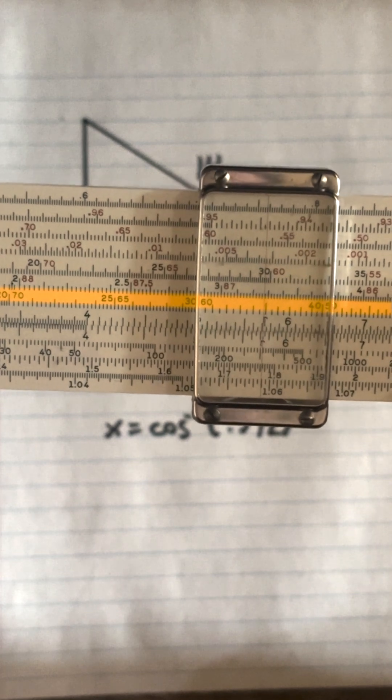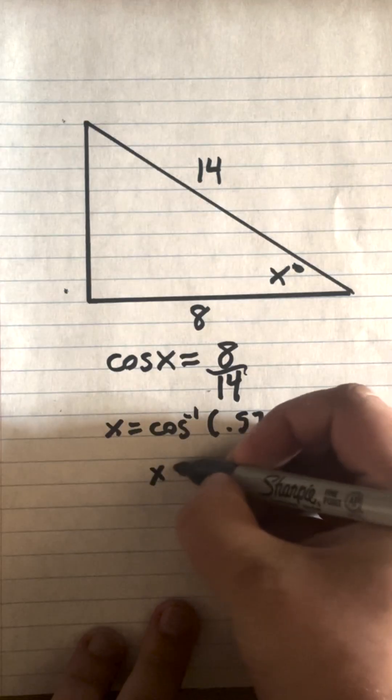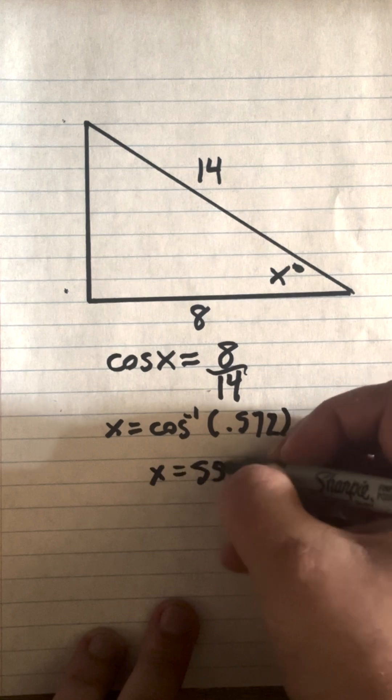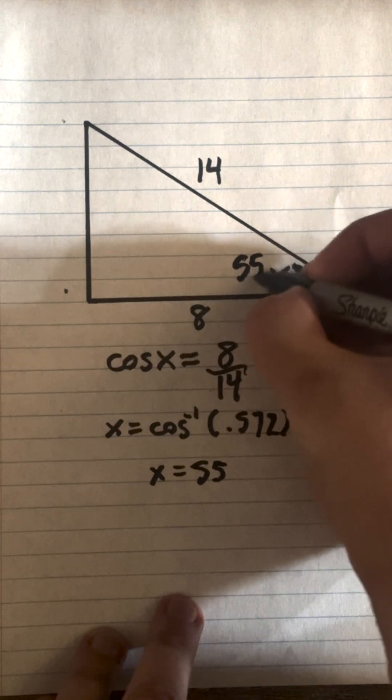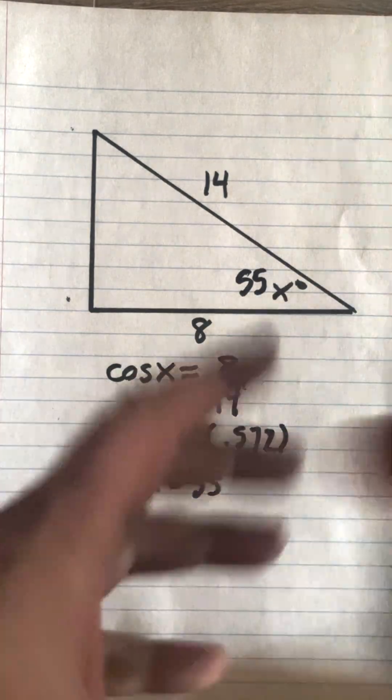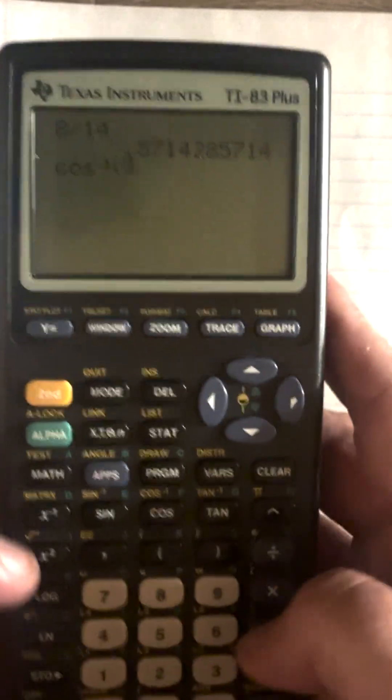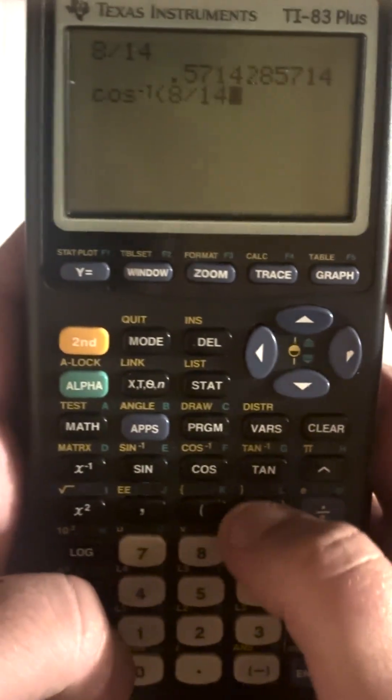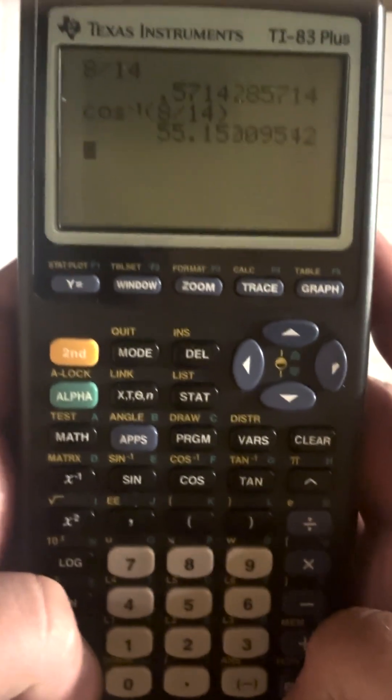And if you look on the cosine scale, we're at 55 degrees. X equals 55 degrees. Now let's double check that inverse operation of cosine: 8 divided by 14 equals 55 degrees.